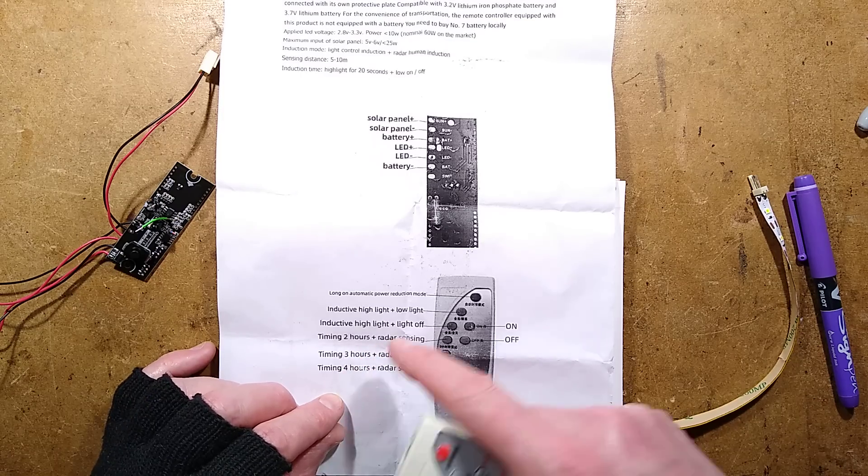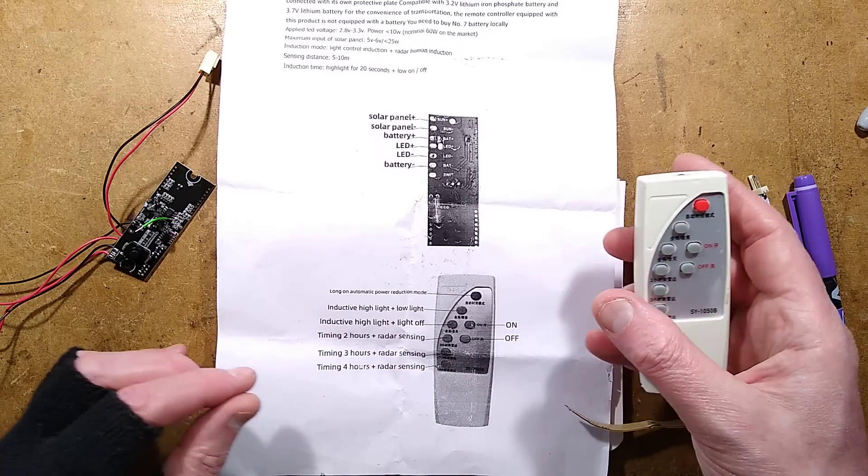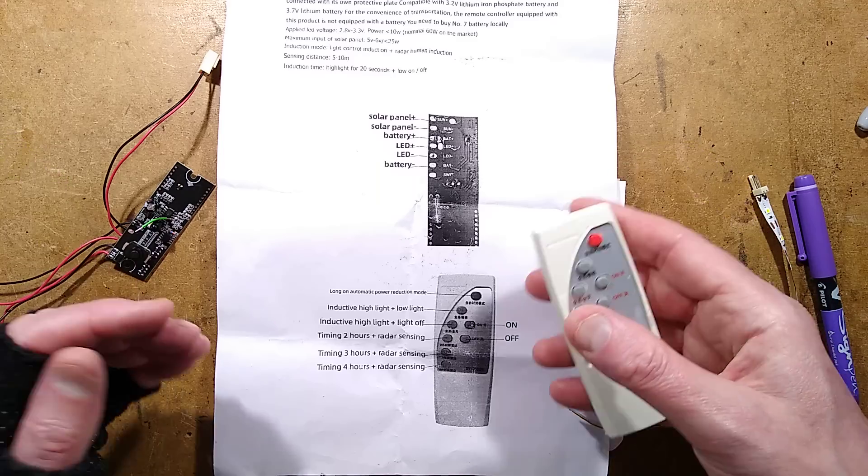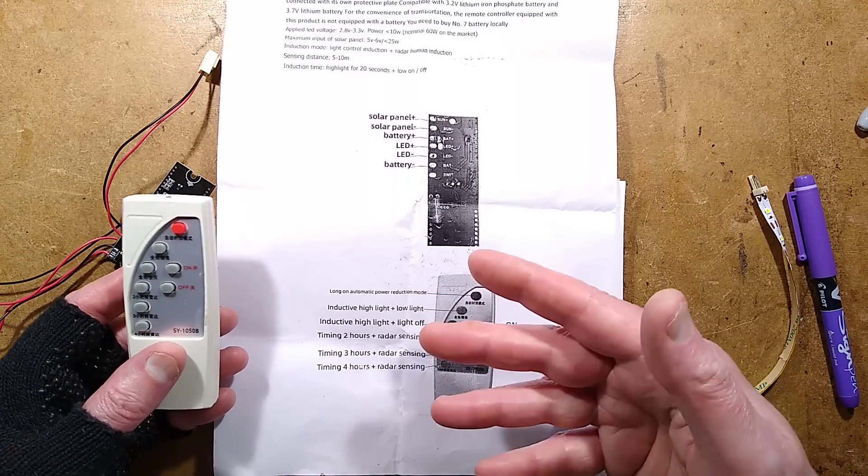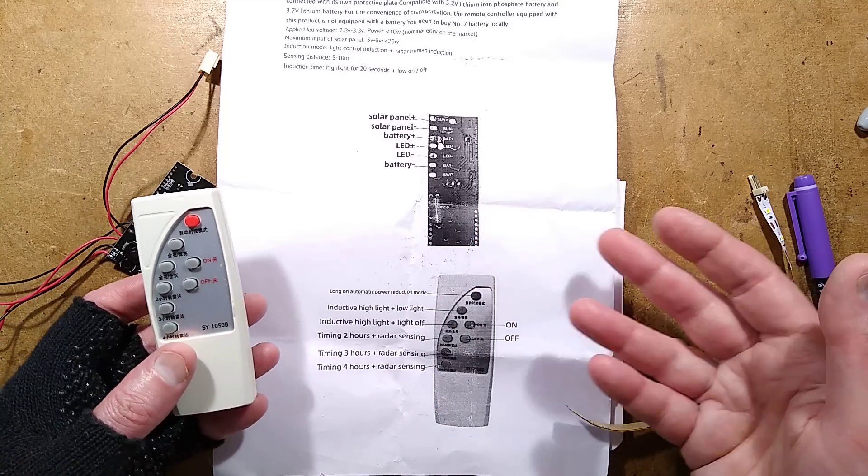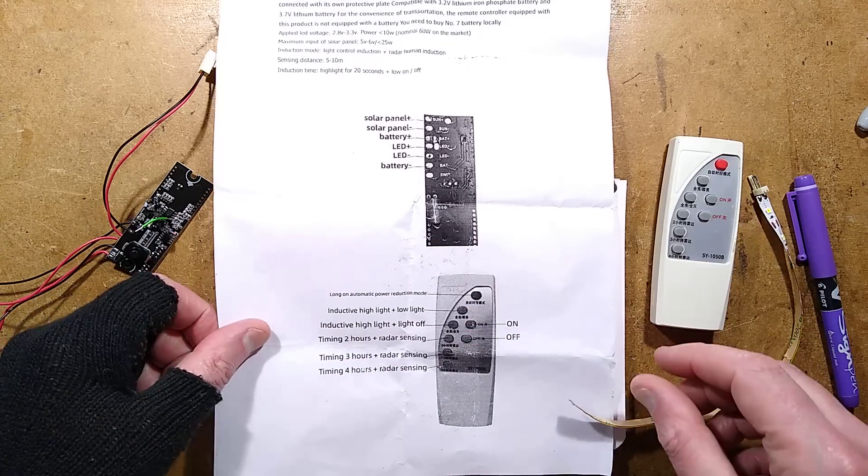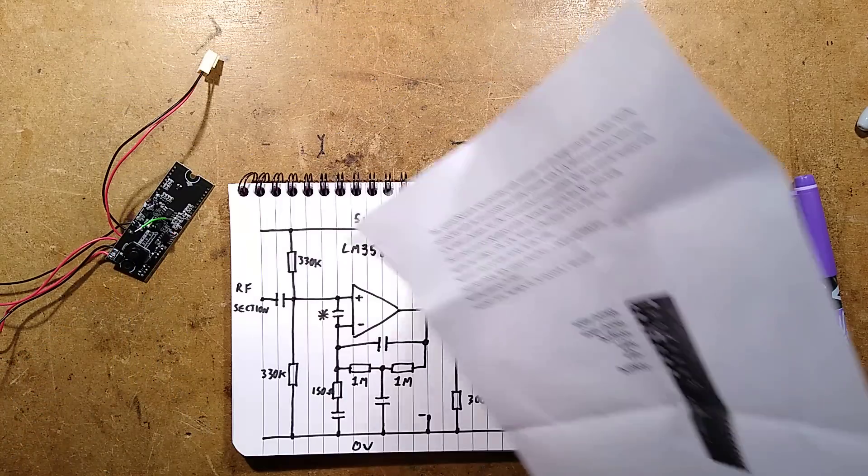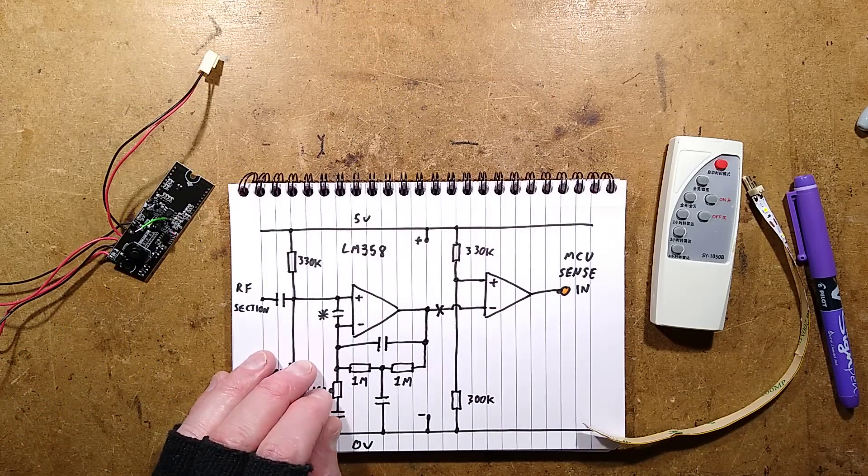Timing, two hours and radar sensing, three hours and four hours. That, I'm guessing, from dusk, it'll be using the radar sensing, but it'll actually just time off completely. It'll go out after that number of hours. That's a guess. I'm not going to wait for two or three hours or four hours, indeed, to actually test that. But that's it.